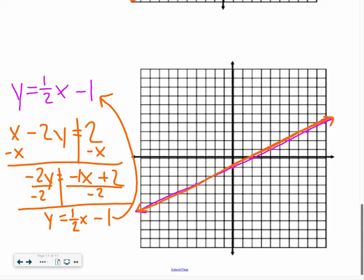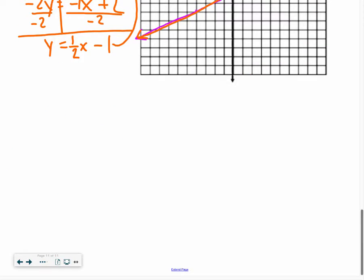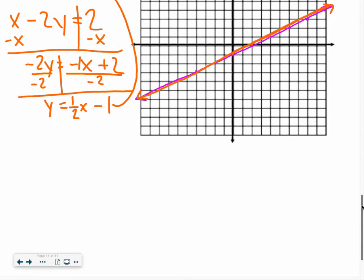But when you end up with a graph where you only have what looks like one line on it, or the equations end up being an equation for the same line, instead of it being no solutions, it intersects at more than one point, right? It intersects everywhere. So you can say infinitely many solutions.